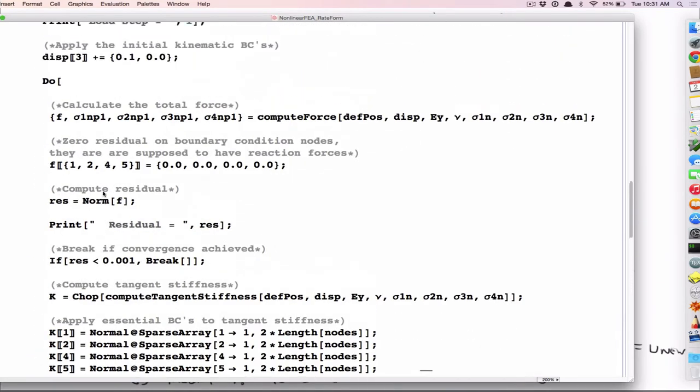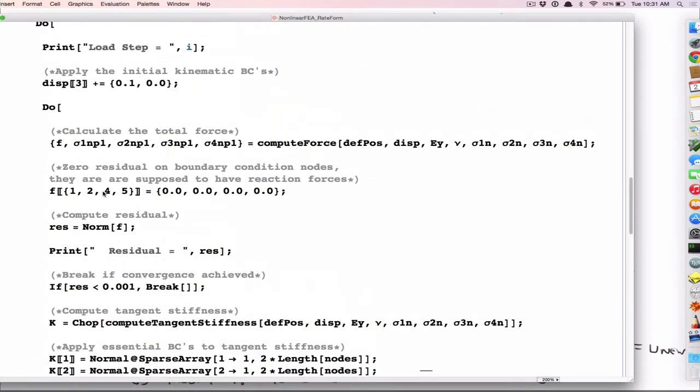And so what I do is I pull on it in five steps of point one. So point one, point one, point one. Now, it's a linear problem. I could have just went right to point five. It would have solved it. For nonlinear problems, you can't do that.